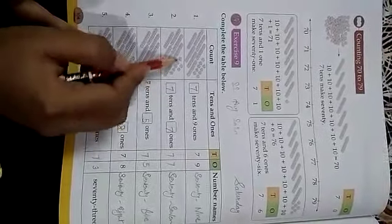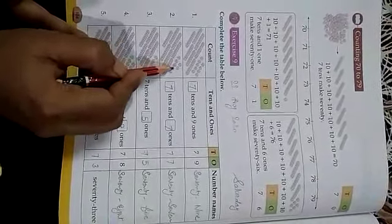7 10s and 1, 2, 3, 4, 5, 6, 7. 7 10s and 7 1s. It makes 77.